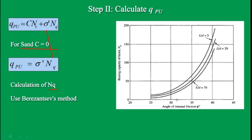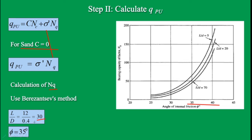For our numerical, phi is given as 35° and L/d = 12/0.4 = 30. Going to phi = 35 on the Berzantsev chart and reading at L/d = 30, the value of Nq comes out just below 50 — I have taken it as 48. So Nq = 48. This is how we use Berzantsev's method to find Nq. There is also Meyerhoff's method, but the numerical specifically requires Berzantsev's method.